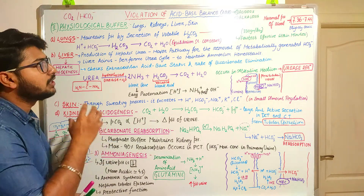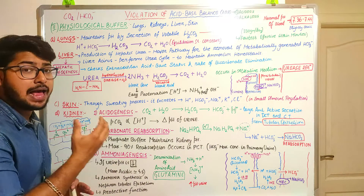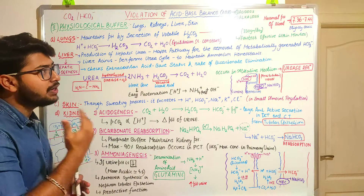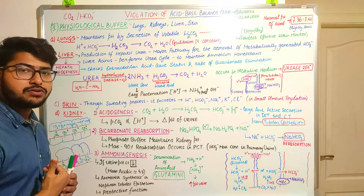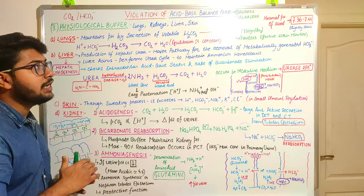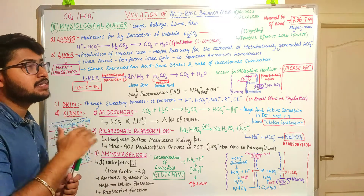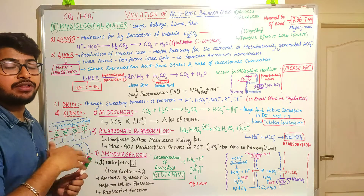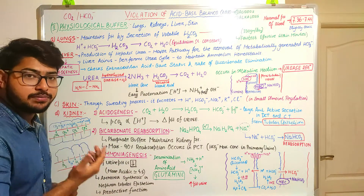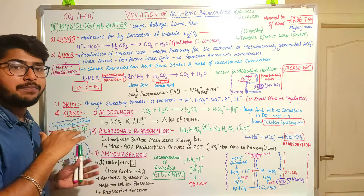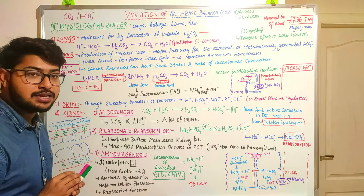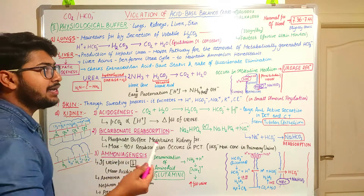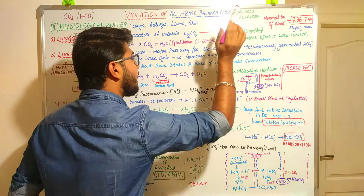First of all, the violation of acid-base balance — when our body organs are functioning normally, the acid-base balance is also maintained normally. But when there is a disturbance or any kind of disorder in the mechanism of regulation of acid and base balance, then we get two kinds of pathology: acidosis and alkalosis.